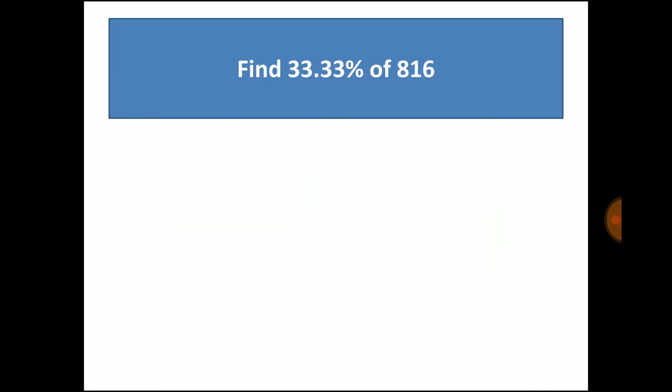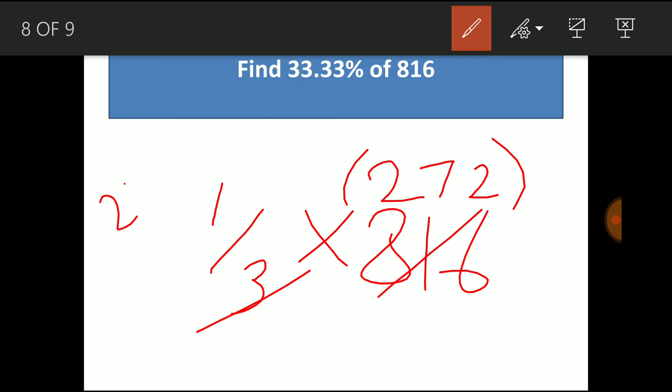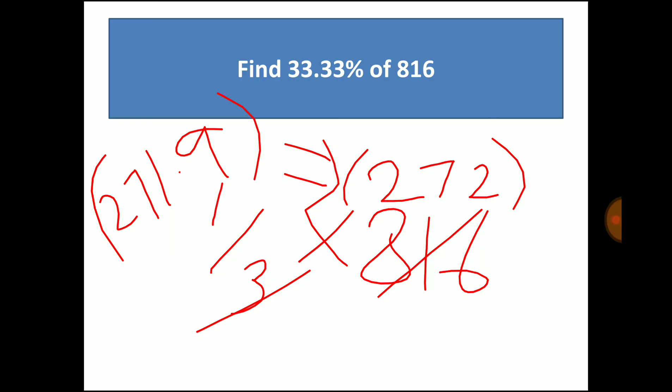Last example, find 33.33% of 816. So you can write it as 33.33 by 100 into 816 or you can write the equivalent fraction. So equivalent fraction of 33.33 is 1 by 3. So 1 by 3 into 816, cancel it, you get 272. So 272 is 33.33% of 816. But if you use the traditional method 33.33 by 100 into 816, you get approximately 271.9. However, the answer is going to be same. So you can use the fraction instead of percentage to make the operation simple.